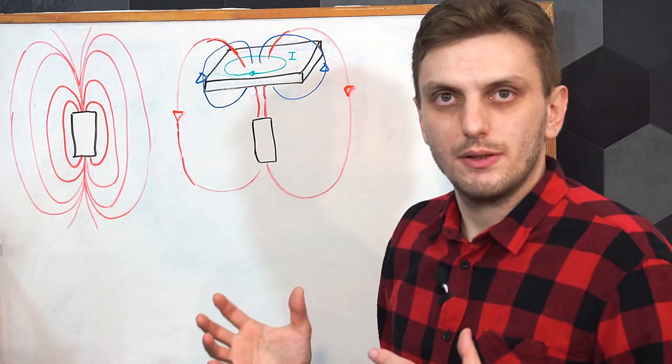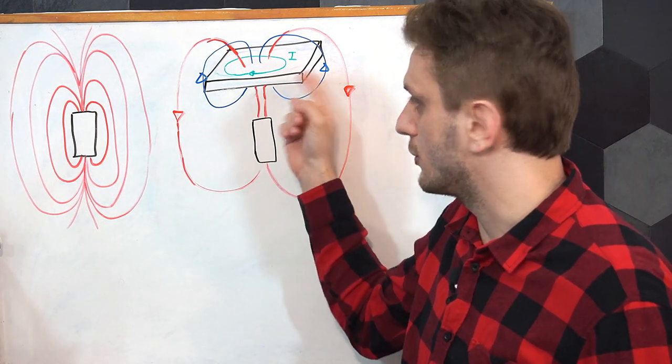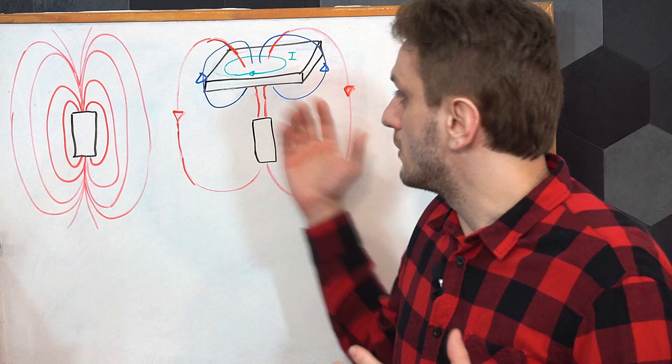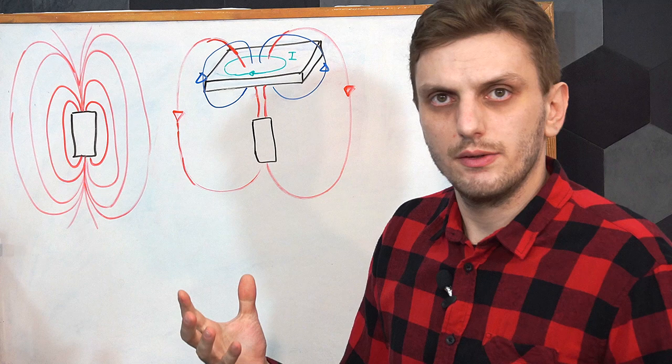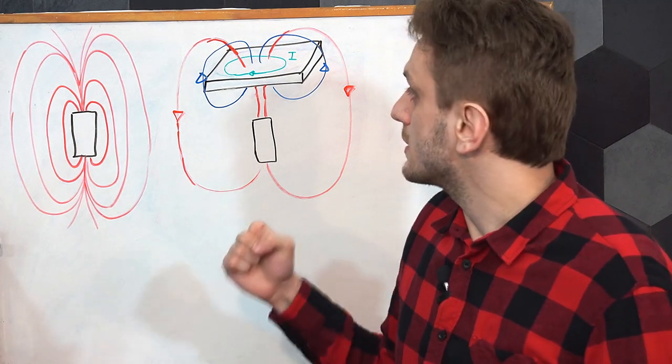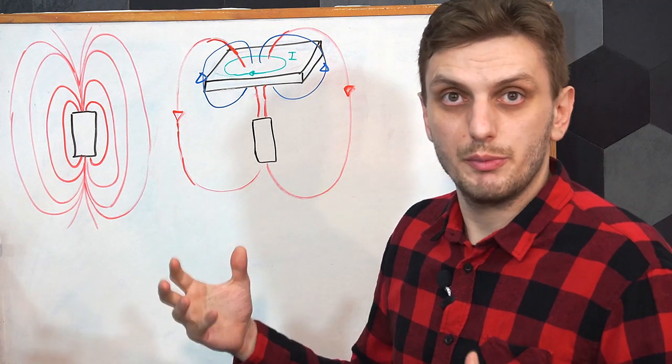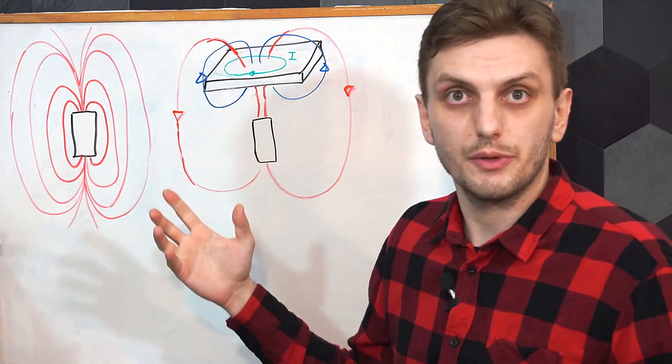There's two properties that we need to be interested in. First of all, we care about the conductivity of this material. The more conductive it is, the higher currents that can pass through it. On the other side, we're interested in its permeability, because the more permeable the material is, the stronger magnetic fields that our induced current can generate.